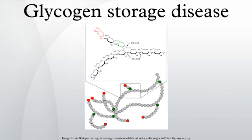There are 11 distinct diseases that are commonly considered to be glycogen storage diseases. GSD type 8, in the past considered a distinct condition, is now classified with type 6, and has been described as X-linked recessive. GSD type 10, in the past considered a distinct condition, is now also classified with type 6.